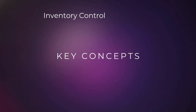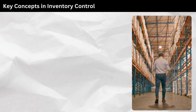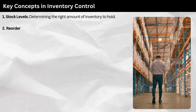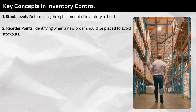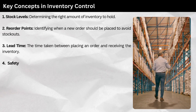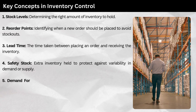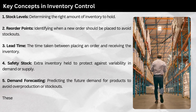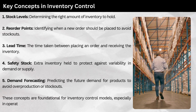Before getting in depth of inventory control, you should know its key concepts: 1. Stock levels — determining the right amount of inventory to hold. 2. Reorder points — identifying when a new order should be placed to avoid stockouts. 3. Lead time — the time taken between placing an order and receiving the inventory. 4. Safety stock — extra inventory held to protect against variability in demand or supply. 5. Demand forecasting — predicting future demand to avoid overproduction or stockouts. These concepts are foundational for inventory control models, especially in operations research.